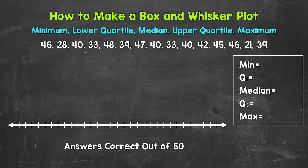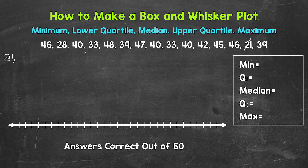Now the first thing that we need to do is put the data in order from least to greatest. So let's start with the smallest number in value, which is 21 here. I'm going to cross off numbers as we go along in order to stay organized.